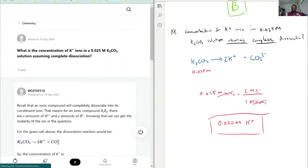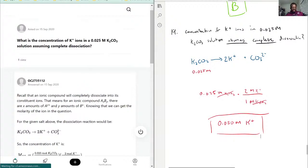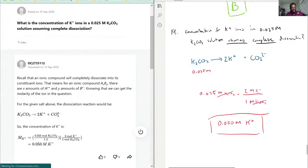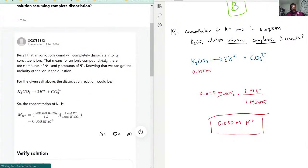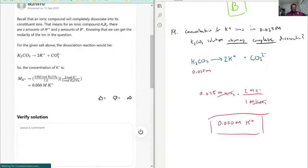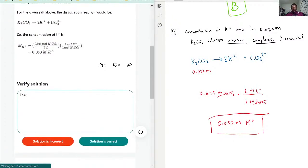So we can see here they did that, they have the one-to-two ratio, that's how they got 0.050 molarity, and this is correct. Awesome, so now let's see quickly how we're doing.